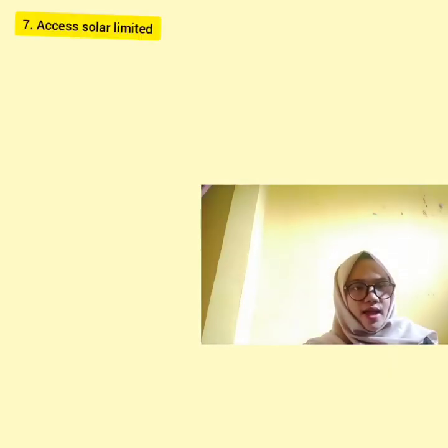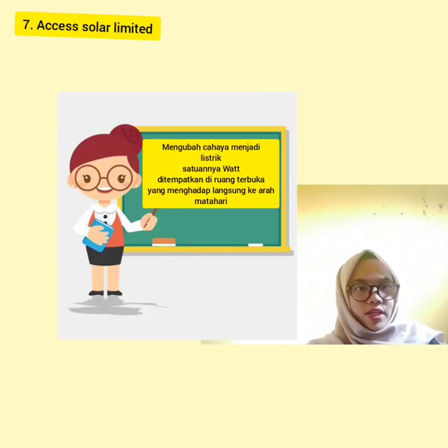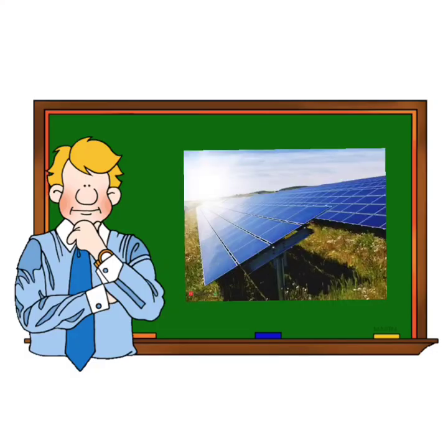Yang ketujuh adalah solar panel atau aksesuar limited. Fungsinya untuk mengubah cahaya matahari menjadi listrik. Satuannya adalah ampere. Dijelaskan sebagai cahaya listrik yang menyerap energi matahari dan menyebabkan arus mengalir antara dua lapisan yang berlawanan.